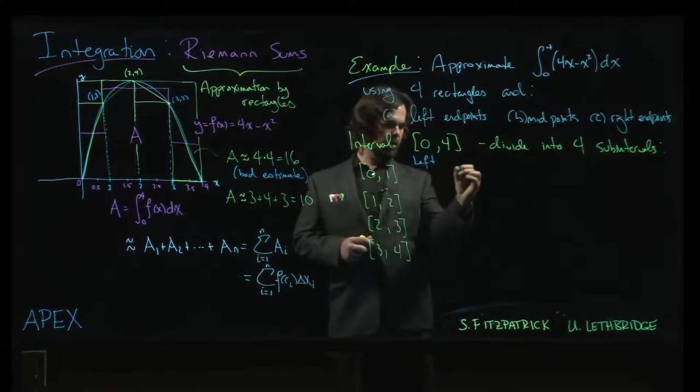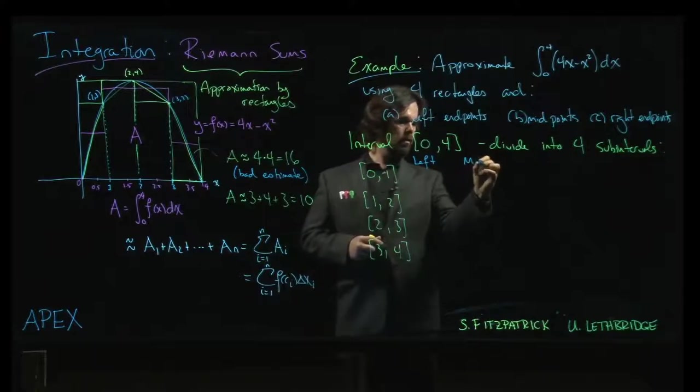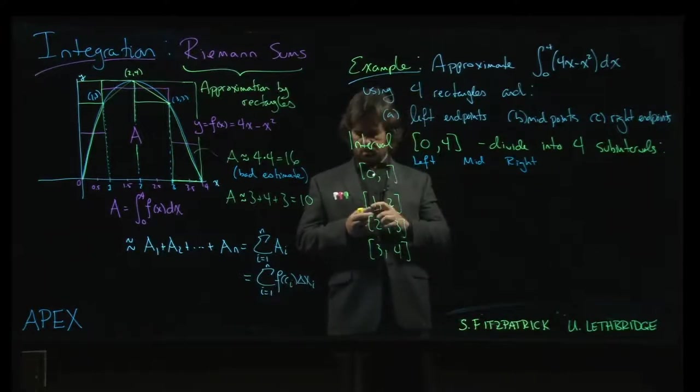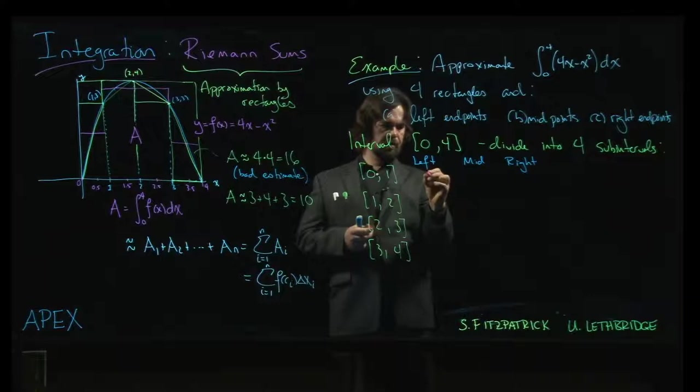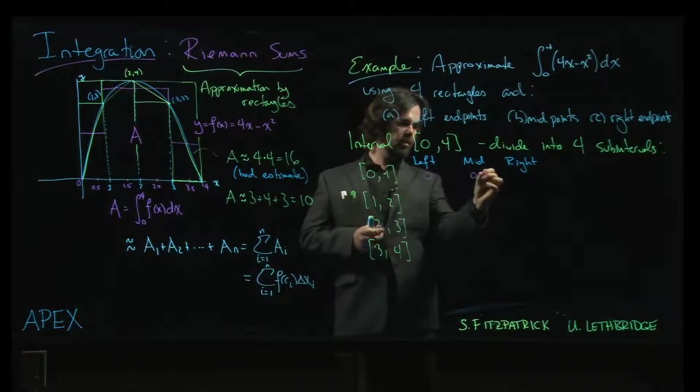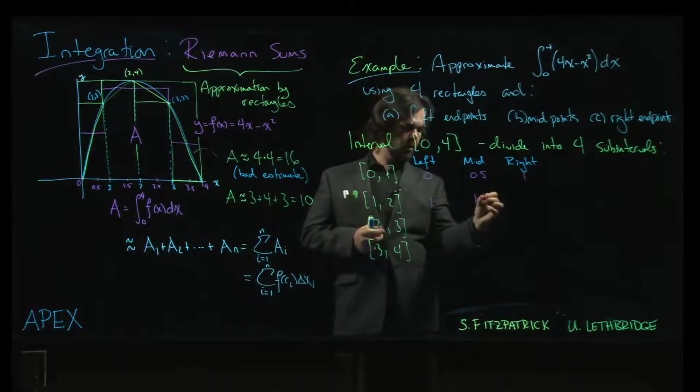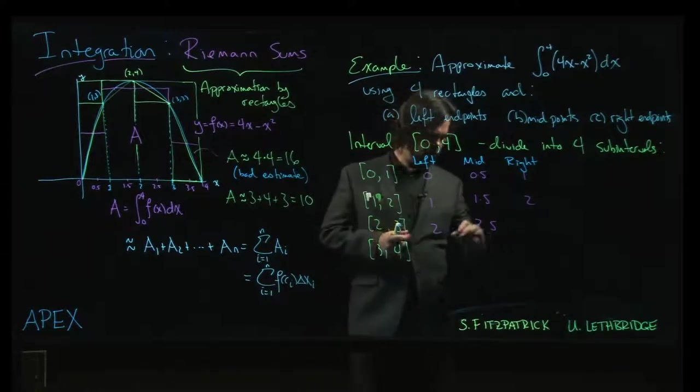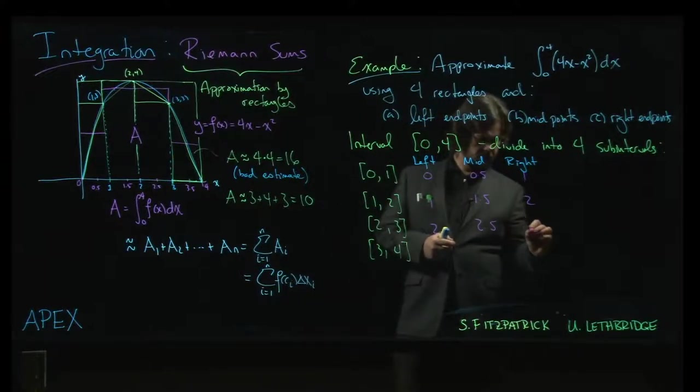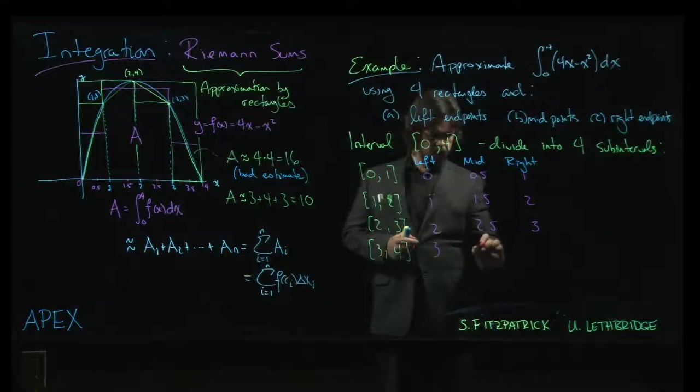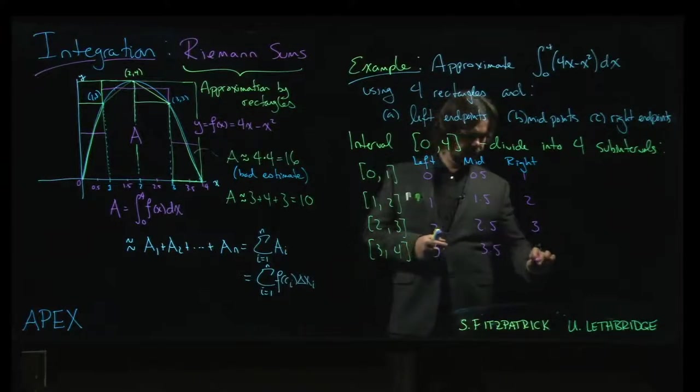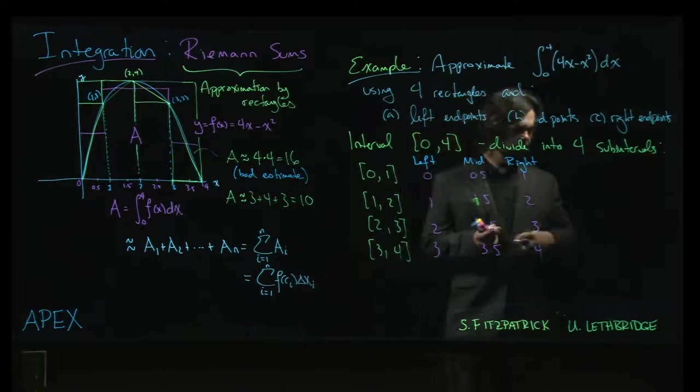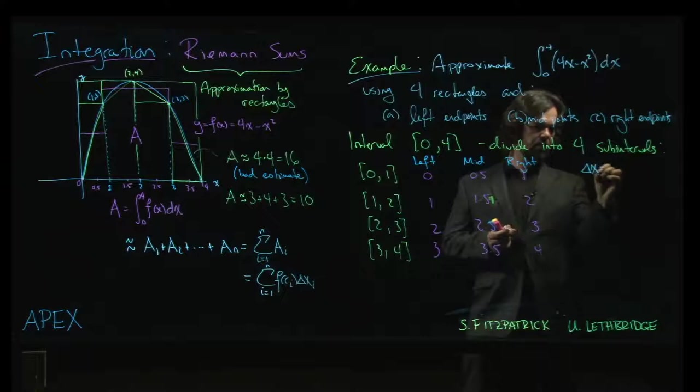Here it's going to be zero, zero point five, and one. Then one, one point five, and two. Then two, two point five, and three. And three, three point five, and four. For all of the intervals our delta x here is just one.